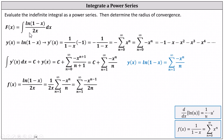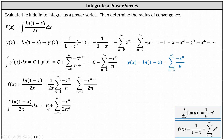F(x) equals the indefinite integral of the power series for f(x), which indicates the original indefinite integral is equal to c plus the sum from n equals 1 to infinity of the opposite of x to the power of n minus 1 plus 1, which simplifies to n, all divided by n, where we already have 2n in the denominator. So n times 2n equals 2n squared. This is the power series for the original indefinite integral.